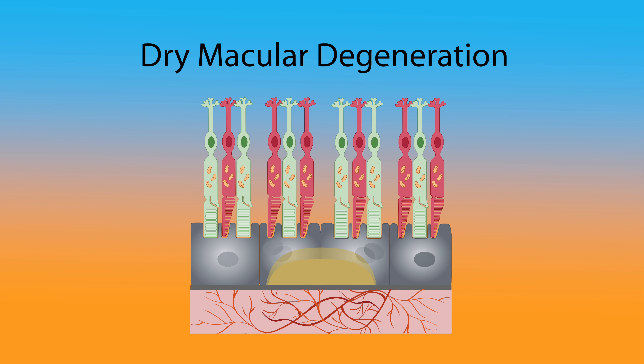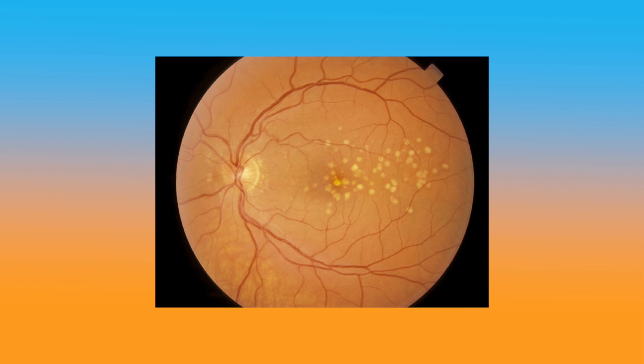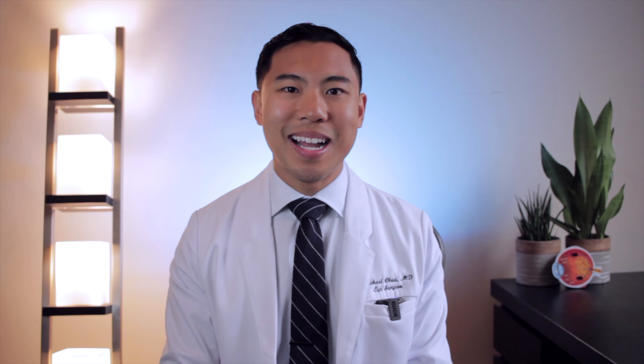These deposits are called drusen. This is a retinal photo of a patient with dry AMD. Here you can see the yellow drusen scattered throughout the macula. With time, drusen can grow in both number and size, which can lead to problems with your central vision.